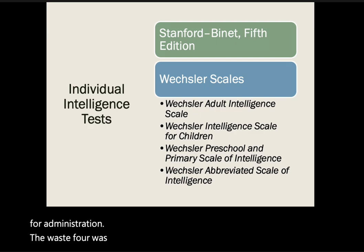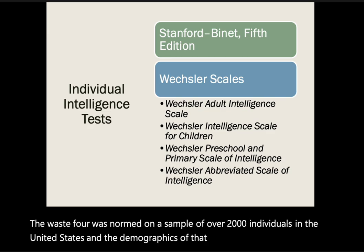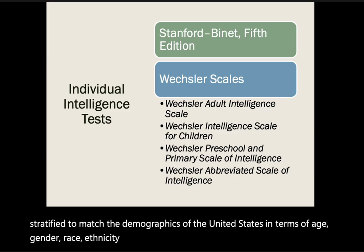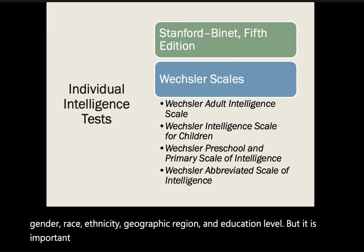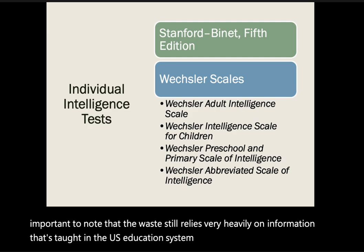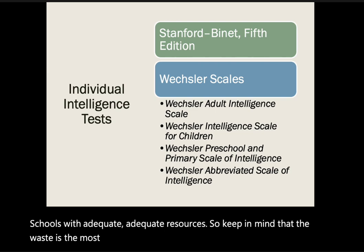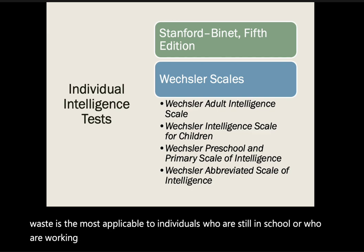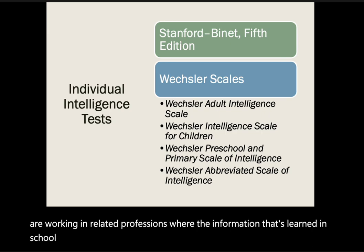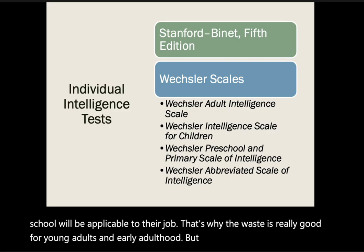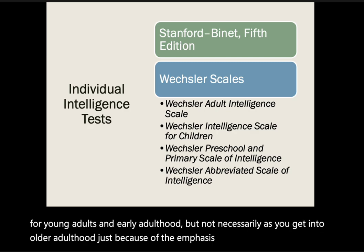The WAIS-IV was normed on a sample of over 2,000 individuals in the United States, with demographics stratified to match the U.S. population in terms of age, gender, race, ethnicity, geographic region, and education level. However, the WAIS still relies heavily on information taught in the U.S. education system, specifically at schools with adequate resources. It is most applicable to individuals still in school or working in related professions, making it most suitable for young adults and early adulthood rather than older adulthood.